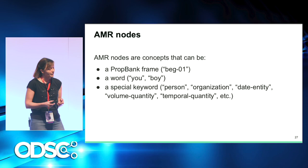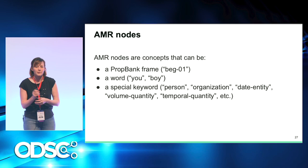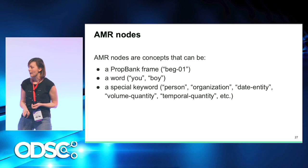AMR nodes can be concepts — separate entities, events taken from PropBank, or special keywords. We want to preserve information about entities, so if we identify a named entity or organization, we can create a node for it and keep the name separately. AMR handles entity types, semantic roles, and coreference — for example, 'me' referring to 'I' is a coreference relation. If we mention John Smith and then refer to him as 'the man' or 'he,' we will have the same concept for all those mentions.